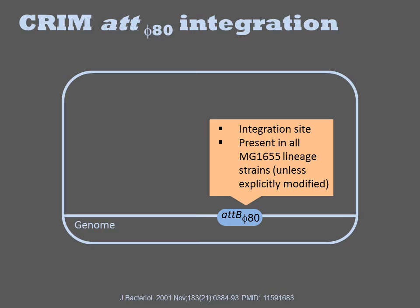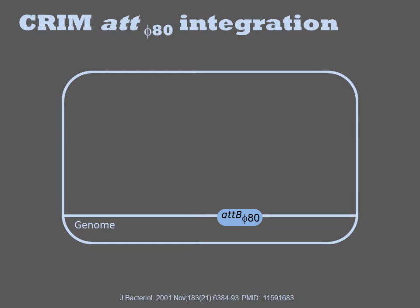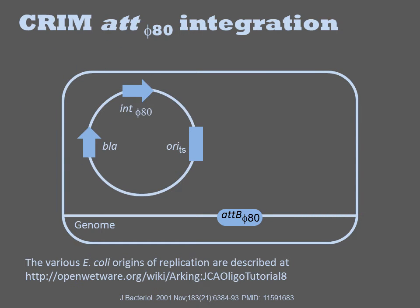Let me describe the different stages of the CRIM integration experiment, considering the Phi-80 system in E. coli. MG1655, the granddaddy of most modern laboratory E. coli strains, contains the Phi-80 att-site, so most laboratory strains are acceptable for this experiment. A helper plasmid with a beta-lactamase gene is introduced into the cell by transformation and selection on ampicillin. The plasmid contains a temperature-sensitive origin of replication, so cells are grown at a permissive temperature of 30°C. It also encodes the Phi-80 integrase, and the cells start producing the protein.